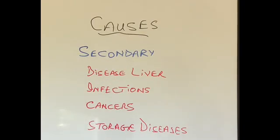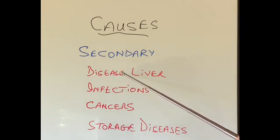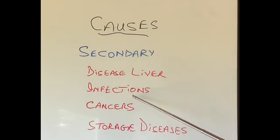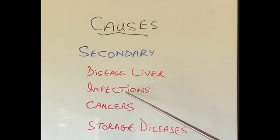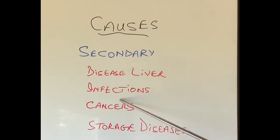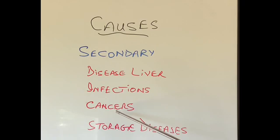In secondary hypersplenism, the spleen is usually very large, so patients have splenomegaly. Common causes include liver disease, which causes portal hypertension — please watch my video on portal hypertension for more information. Many infections like malaria, infectious mononucleosis, tuberculosis, and many others can make the spleen become overactive, and many of these patients also have a large spleen. Many cancers, especially lymphomas and leukemias, can make the spleen very large and very hyperactive. Conditions called storage diseases — in which the body can't get rid of fats, carbohydrates, or proteins — can also cause fat and other substances to collect in the spleen and cause it to become hyperactive.